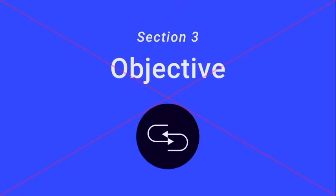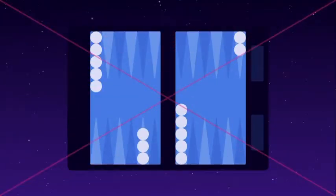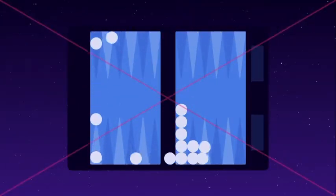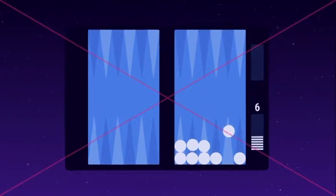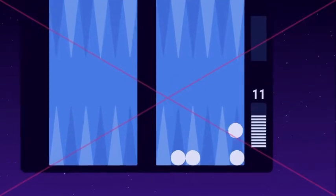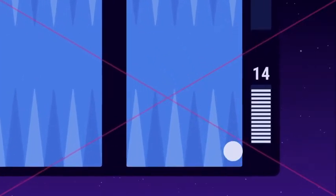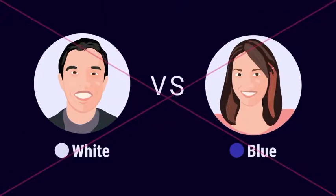Section 3: Objective. The objective of Backgammon is to move all your checkers into your home board and then bear them off. It's only possible to bear off checkers when all of your checkers are in your home board. The first player to bear off all their checkers wins the game. Let's watch a game between white and blue.